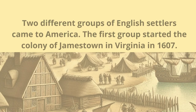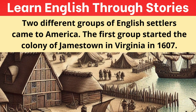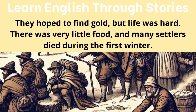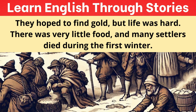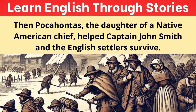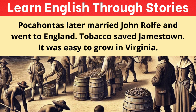Two different groups of English settlers came to America. The first group started the colony of Jamestown in Virginia in 1607. They hoped to find gold, but life was hard. There was very little food, and many settlers died during the first winter. Then Pocahontas, the daughter of a Native American chief, helped Captain John Smith and the English settlers survive. Pocahontas later married John Rolfe and went to England. Tobacco saved Jamestown — it was easy to grow in Virginia. Smoking became fashionable in Europe, and the colony prospered by selling tobacco.